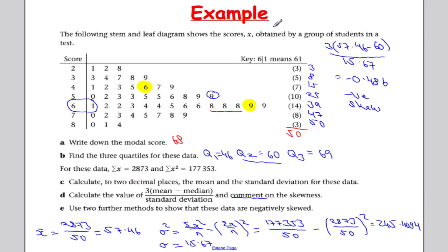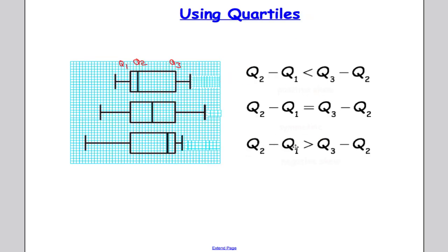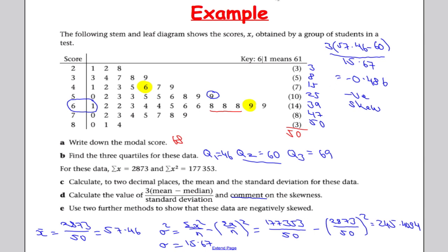Use two further methods to show that these data are negatively skewed. Let's go back to what we did earlier. If it was negatively skewed, Q2 minus Q1 should be greater than Q3 minus Q2. So we're going to do Q2 minus Q1, which is 60 minus 46, giving us 14. And Q3 minus Q2, which is 69 minus 60, giving us 9. And 14 is greater than 9, and that also shows that it's negatively skewed.